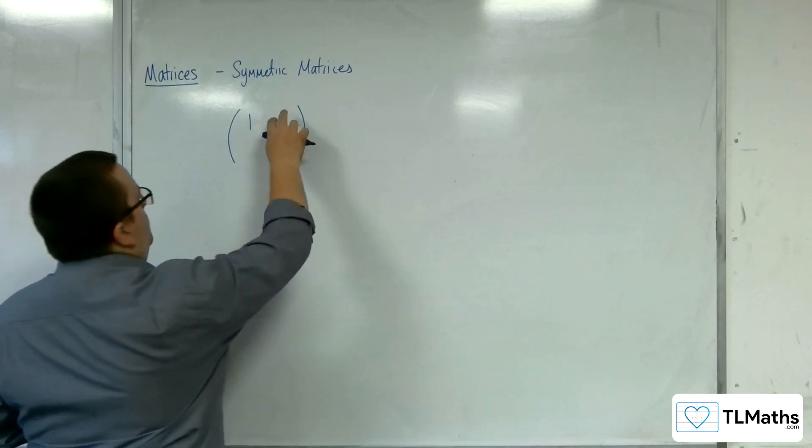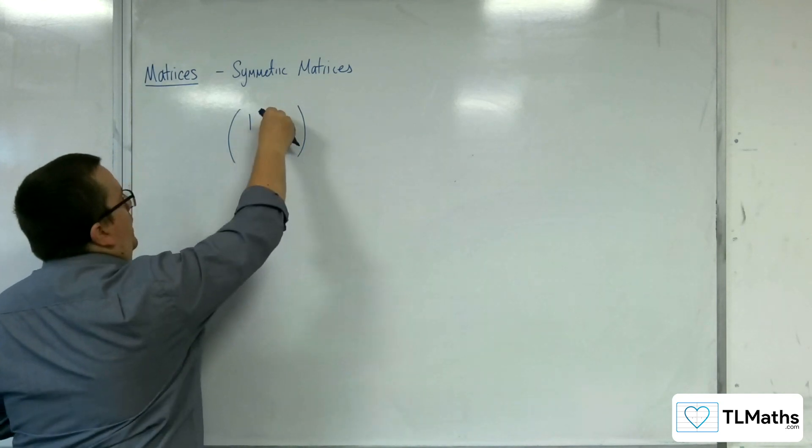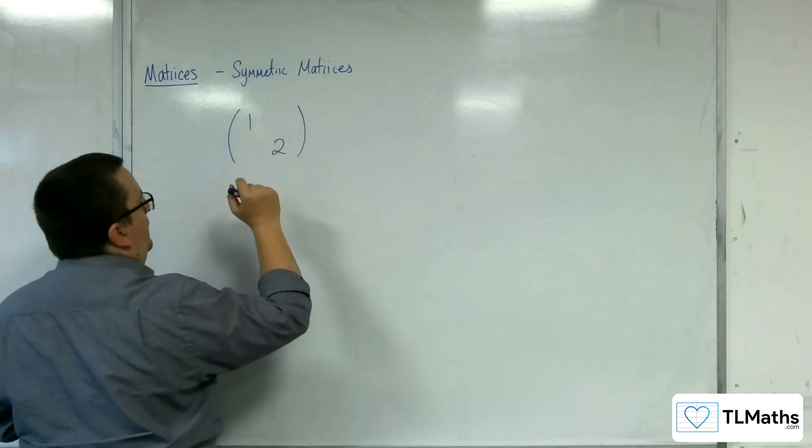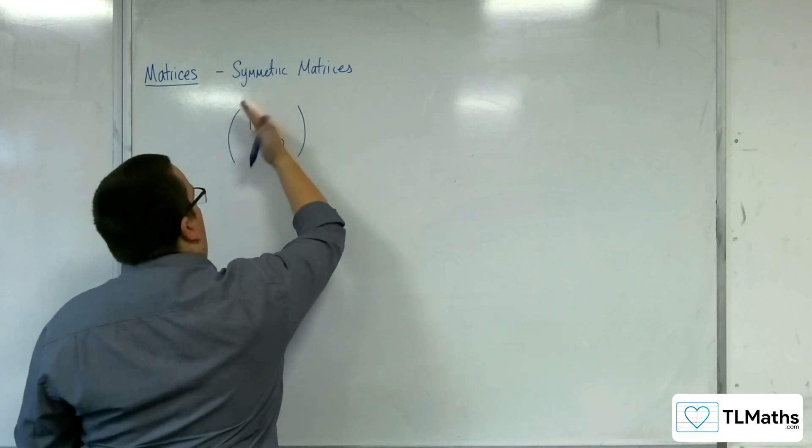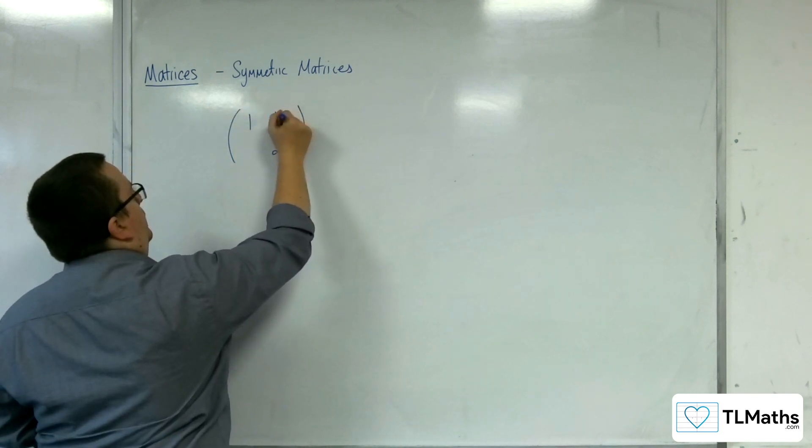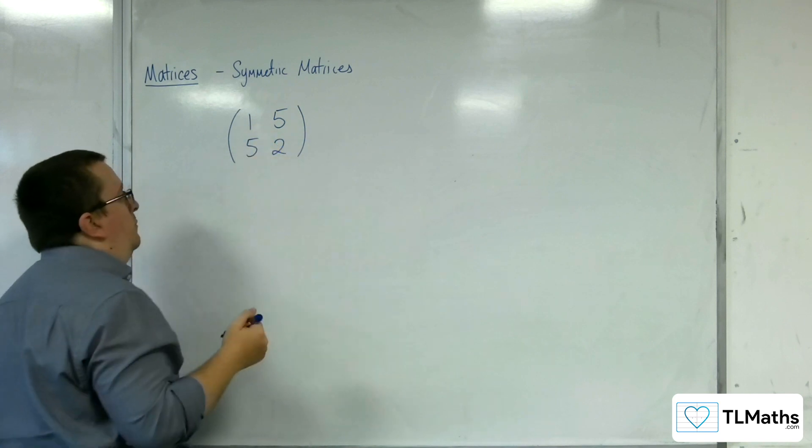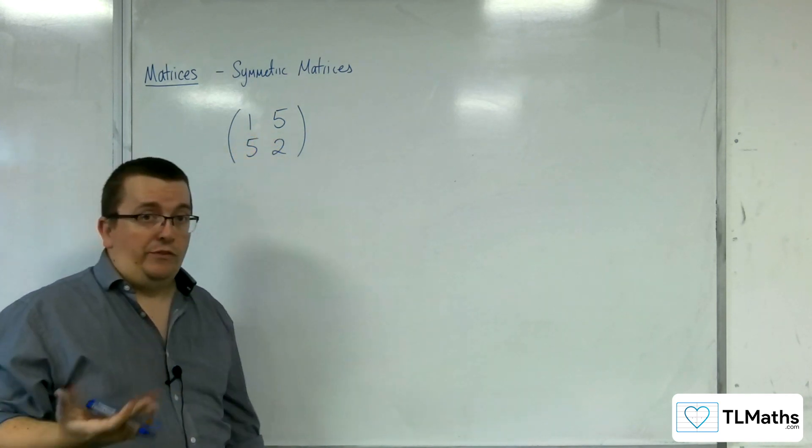But what you must have then is that in the remaining spaces is like a mirror image. You have this as a line of symmetry. So you can have 5, 5 there, for example. But these two numbers would have to be the same.